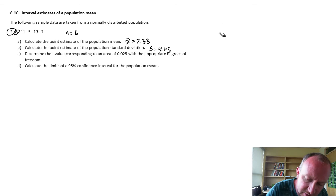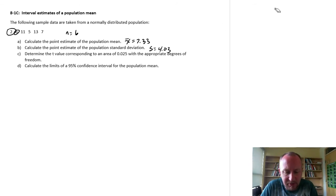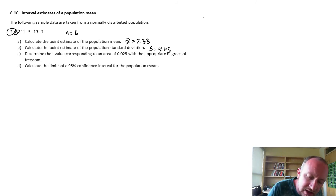So, we have our first two ingredients, our sample mean, our sample standard deviation. Determine the t-value, corresponding to an area of 0.025, with the appropriate degrees of freedom. So, degrees of freedom, when we're doing these types of exercises, is just n minus one.